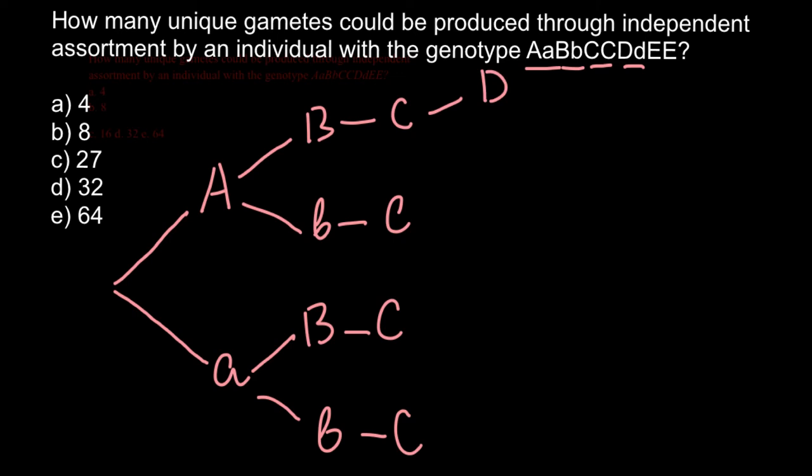so we would have dominant allele D or recessive d for each of the four existing combinations.